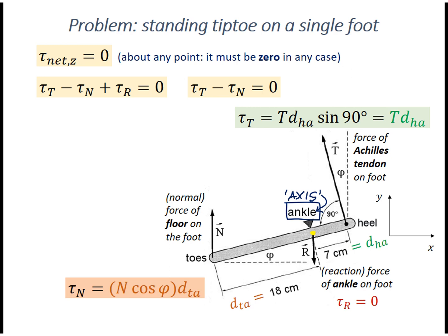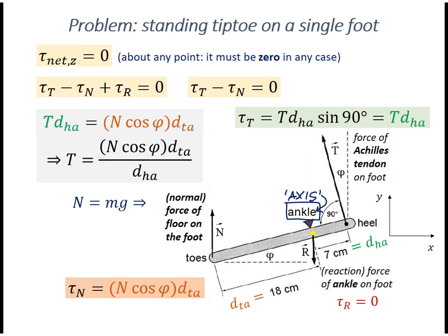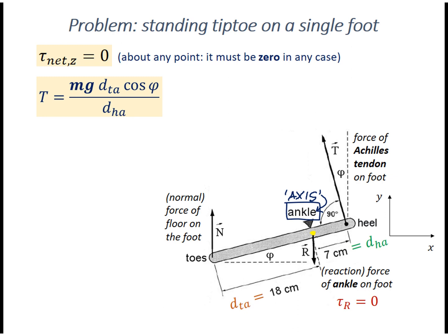Let's set the magnitudes of these two torques equal to each other, and it looks like we can symbolically solve for T, the magnitude of the Achilles tendon force. Since in this situation, the toes of the foot are supporting the entire weight of the person, N must be equal to mg. So substituting N, we get the final answer expressed as a multiple of mg. So, T is equal to mg d sub ta cosine phi over d sub ha.